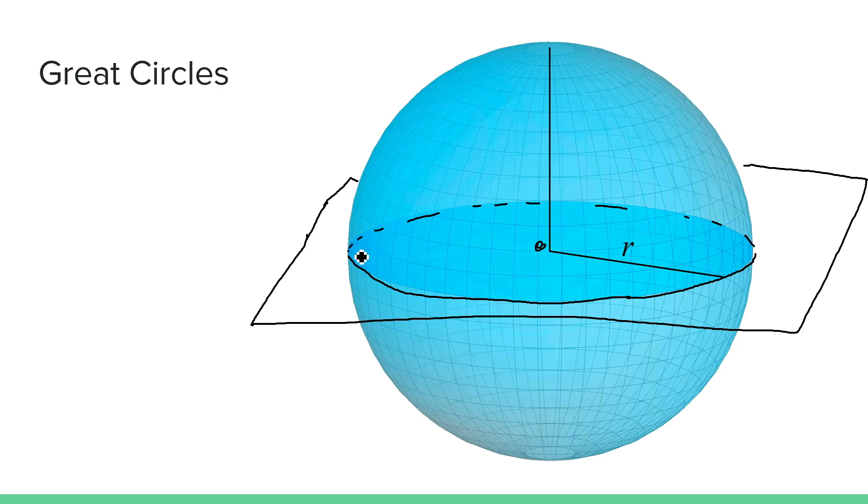We call these circles great circles. In spherical geometry, we consider great circles to be analogous to lines, and so we describe the geometry in terms of points and great circles.